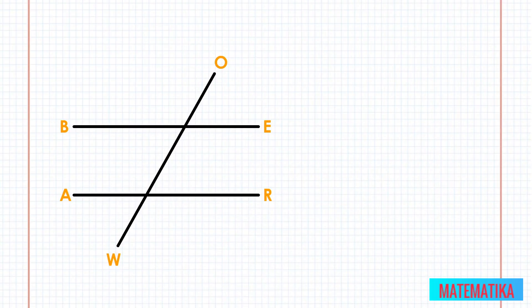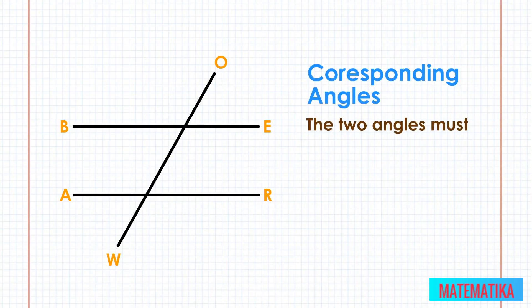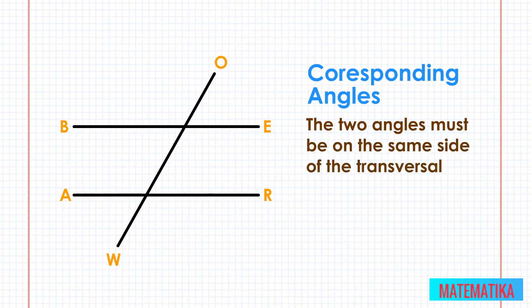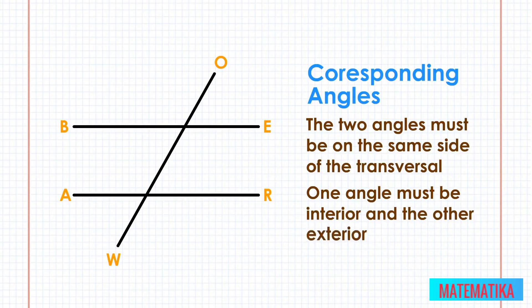The next pairs are called corresponding angles. The two parallel lines are creating corresponding angles. To be corresponding angles, the two angles must be on the same side of the transversal. One angle must be interior and the other exterior.